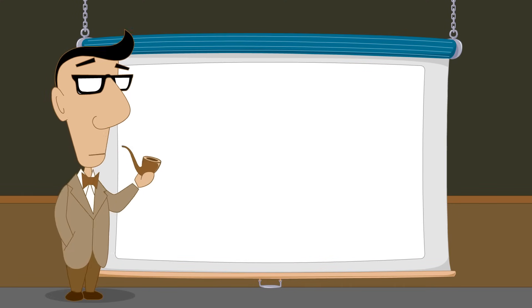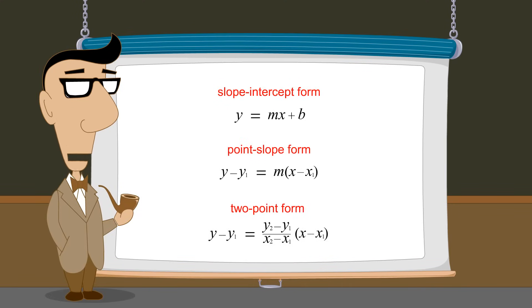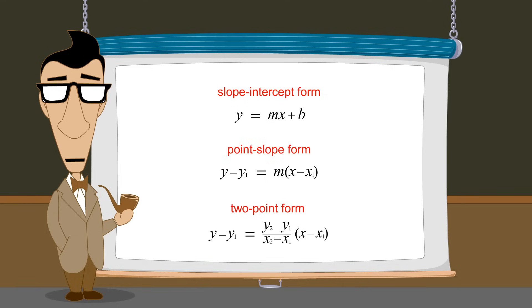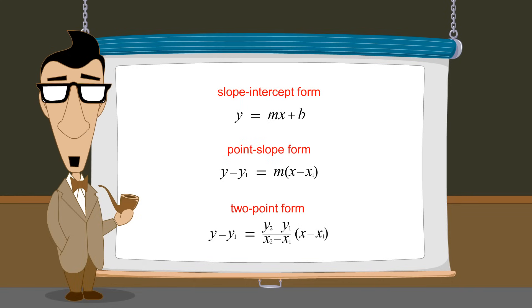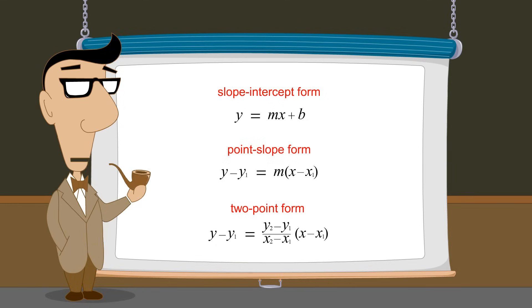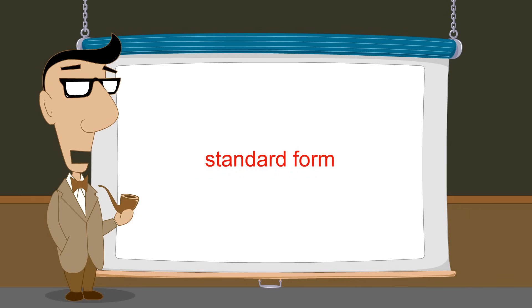There are many different forms of equations which describe lines in the xy-plane. So far, we have discussed three of the most common forms. Any of these forms may be used to describe a specific line. The most convenient form to use depends upon what information is known about the line. In the next lecture, we will introduce one additional form of linear equation called the standard form.